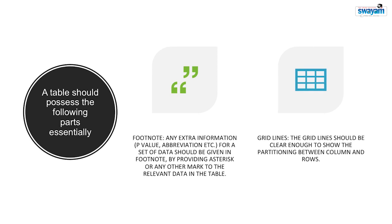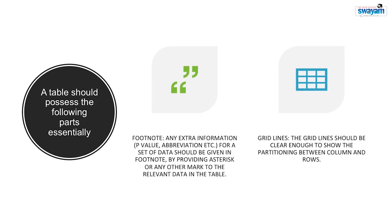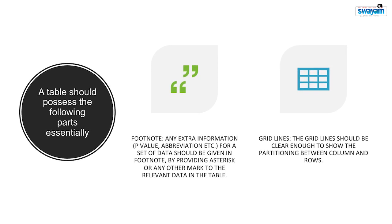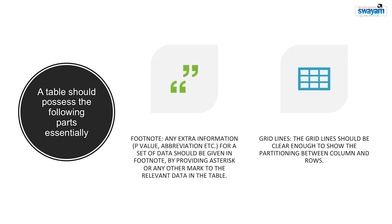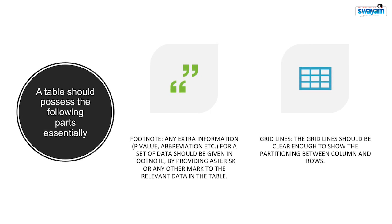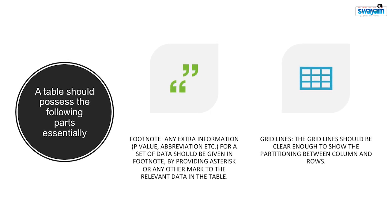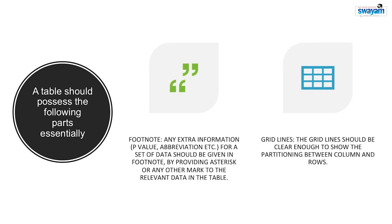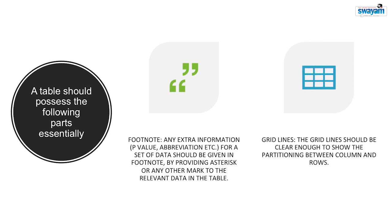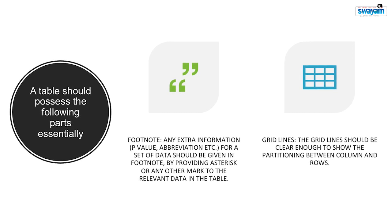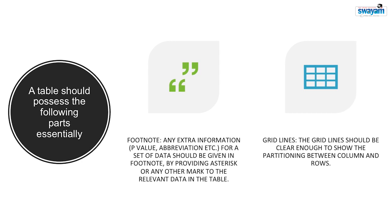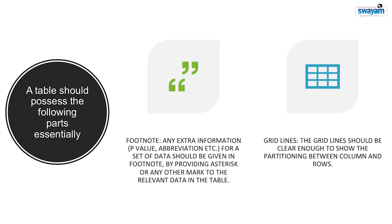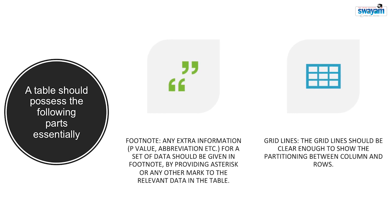Never skip the units of measurement when you are putting it in the title. Footnote: any extra information like p-value, abbreviation, etc. for a set of data should be given in the footnote by providing asterisk or any other mark to the relevant data in the table. This is not compulsory to provide footnote to each table. Gridlines: the grid line should be clear enough to show the partitioning between column and rows. Sometimes hiding the grid lines make the table confusing. In tables, unnecessary color in column and rows should be avoided. You can directly paste any table from MS Excel worksheet to MS Word file also.